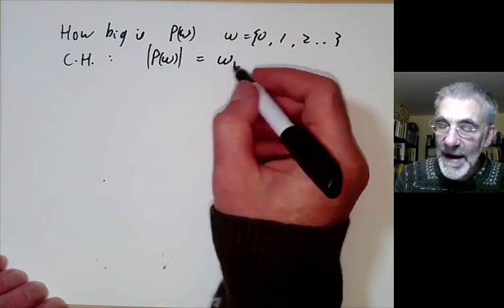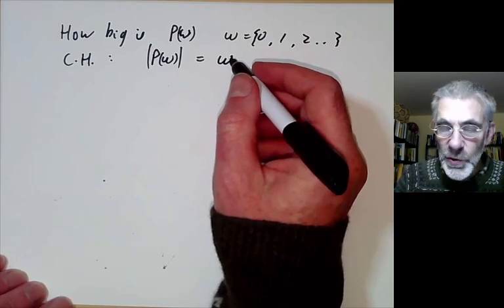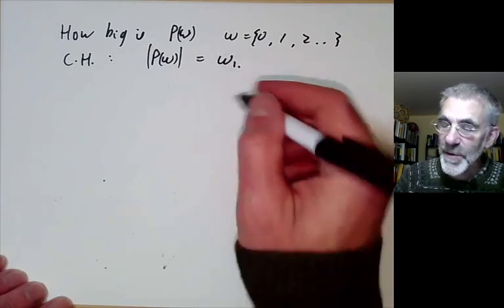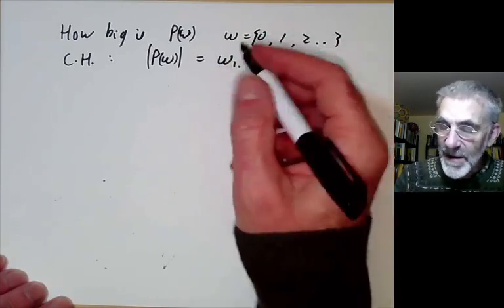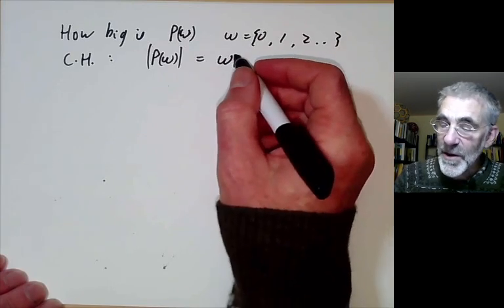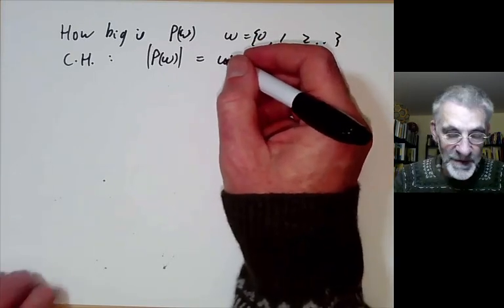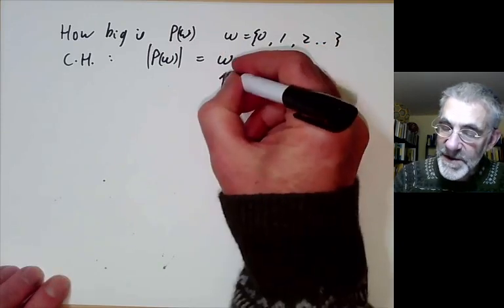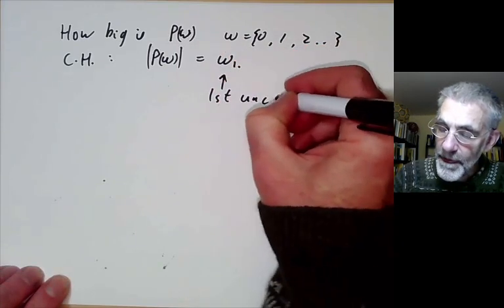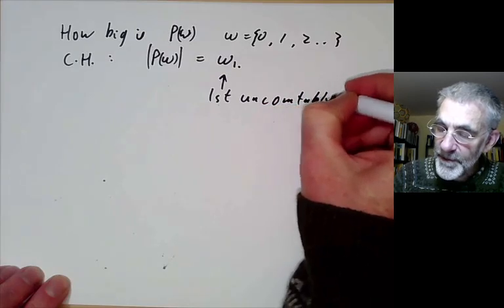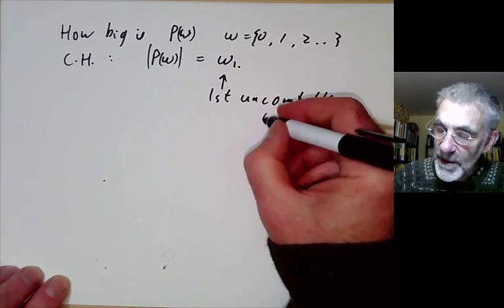Well it's sometimes generated by aleph one but I can never remember how to draw Hebrew letters aleph so I'm going to use omega one instead which is not quite correct really because omega one is usually first the ordinal but here I'm going to use it for a cardinal. So this is the first uncountable cardinal number.